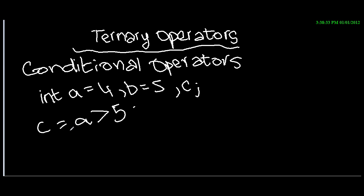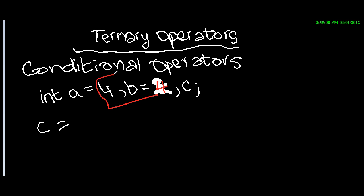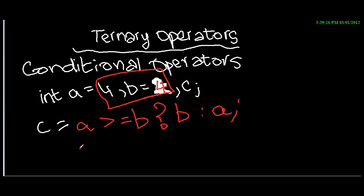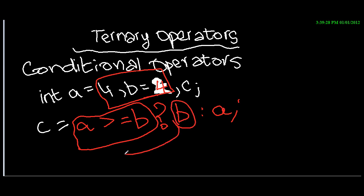Now one last important and potentially confusing question. Let me change the value of b to 4, so now b and a have the same value. I write: c equals a greater than or equal to b question mark b colon a. In this case it checks if a is greater than or equal to b. Since a equals b, the condition is true — so after the question mark is the true value, after the colon is the false value — and it stores the value of b in c.